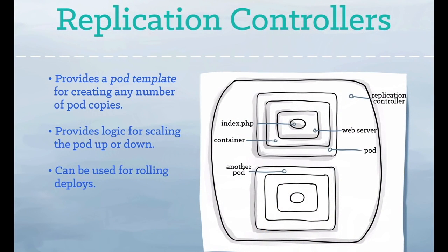Replication controllers provide a method for managing an arbitrary number of pods. A replication controller contains a pod template, which can be replicated any number of times. Through the replication controller, Kubernetes will manage your pod's lifecycle, including scaling up and down, rolling deployments, and monitoring.